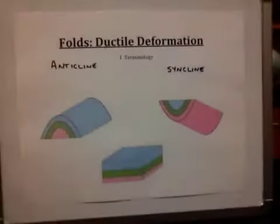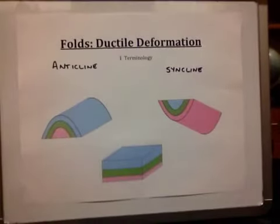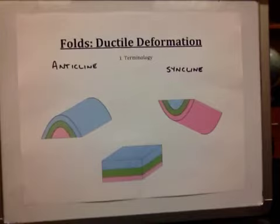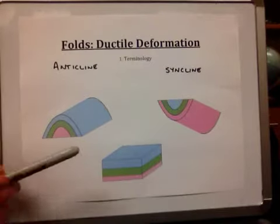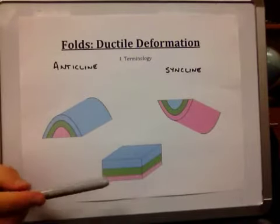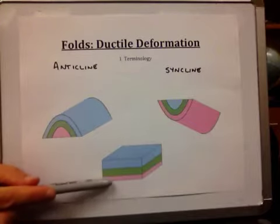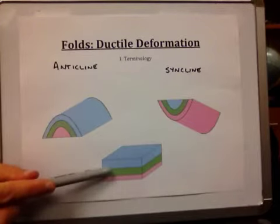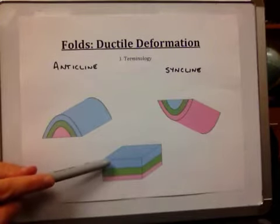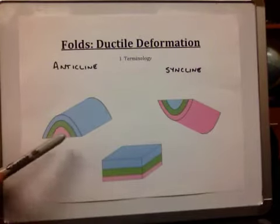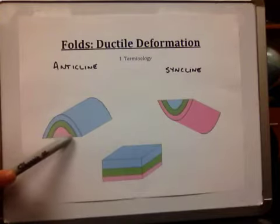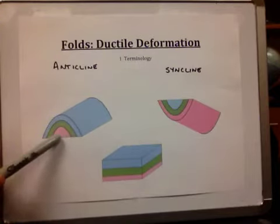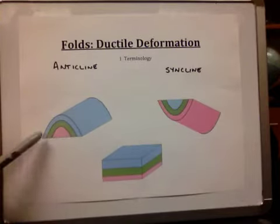The first thing we will notice in our anticline and syncline is the difference in the age of the rocks throughout the fold. Following Steno's principle, pink is the oldest, green is the middle age, and blue is the youngest. In an anticline, the oldest rocks are in the center of the fold, and it gets younger as you move to the sides.